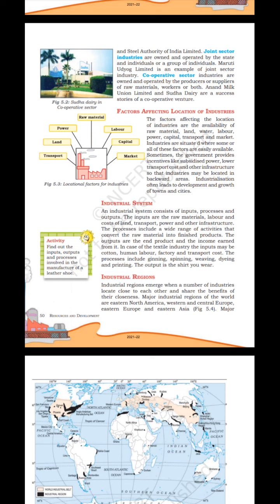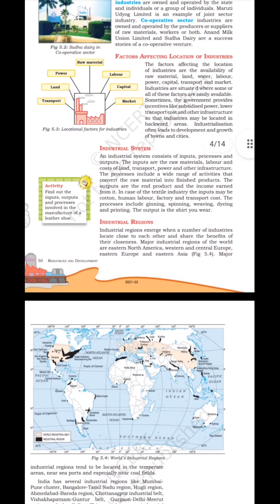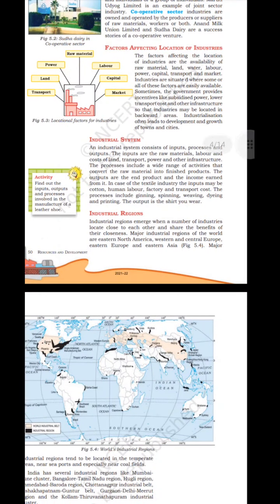Industrialisation often leads to development and growth of towns and cities. An industrial system consists of inputs, processes and outputs. The inputs are the raw materials, labour and costs of land, transport, power and other infrastructure. The processes include a wide range of activities that convert the raw material into finished products. The outputs are the end product and the income earned from it. In the case of the textile industry, the inputs may be cotton, human labour, factory and transport costs.